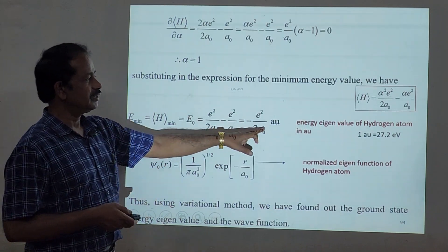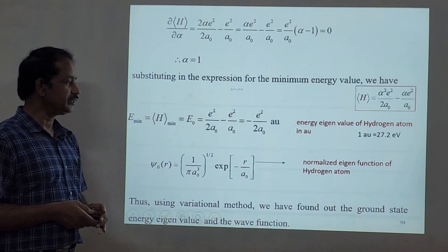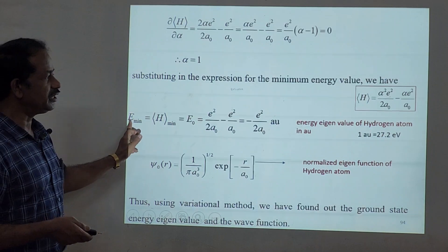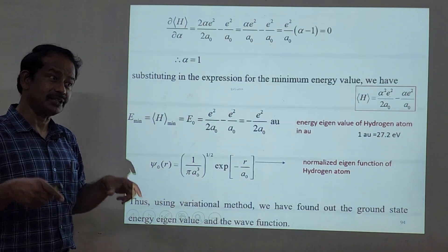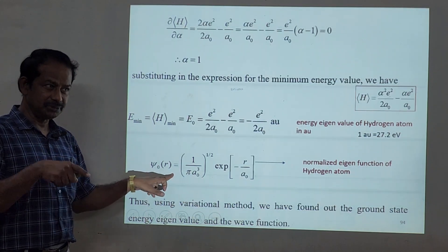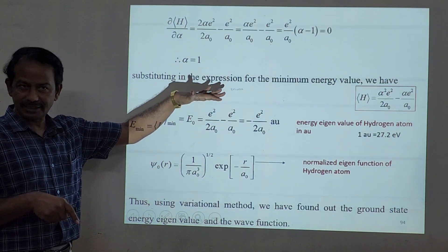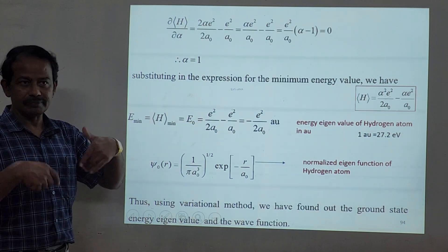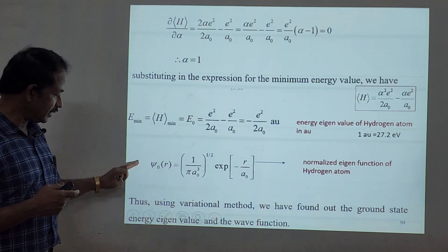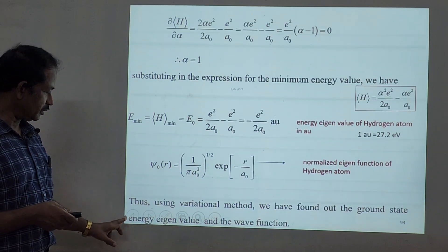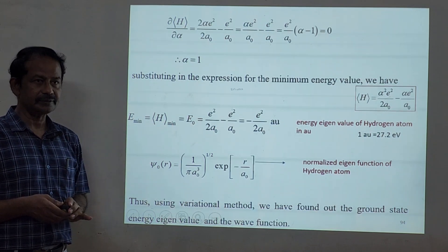The ground state energy of the hydrogen atom is E_min = -e²/(2a₀). In atomic units, one atomic unit equals 27.2 eV, so this gives the correct hydrogen ground state energy. We have assumed the trial wave function, obtained α = 1, and the resulting energy eigenvalue and wave function are exactly equivalent to the known exact values for the hydrogen atom. This confirms the variation method works correctly.